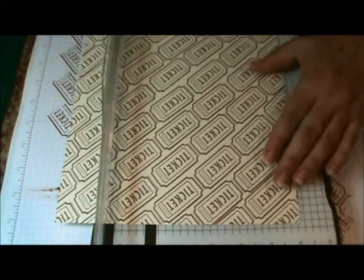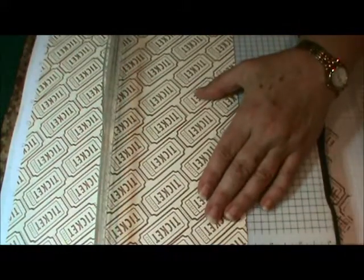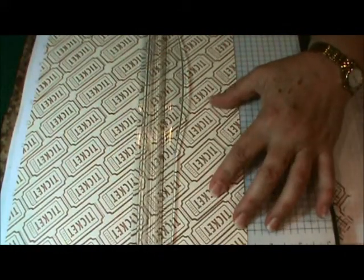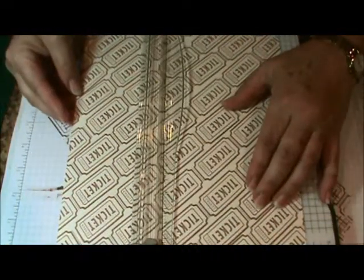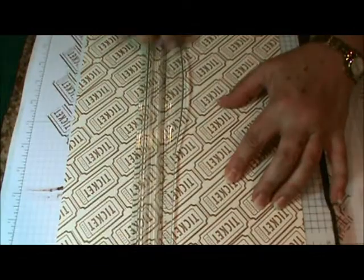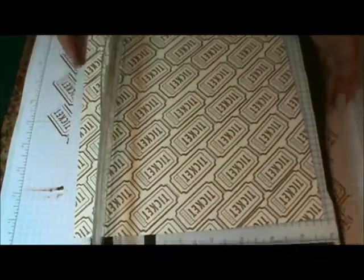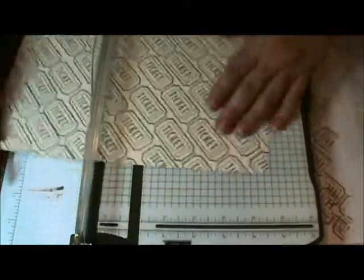You're going to score at three and a quarter and five and a quarter. Then flip your paper around and you're going to do the eleven inch side.